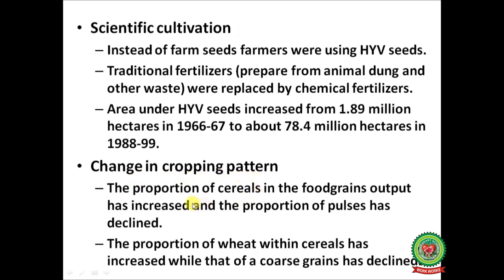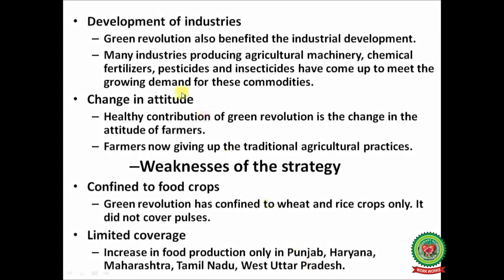Change in cropping pattern: the proportion of cereals in food grains output increased while the proportion of pulses declined. The proportion of wheat within cereals increased while that of coarse grains declined. Development of industries: Green Revolution also benefited industrial development — many industries producing agricultural machinery, chemical fertilizers, pesticides, and insecticides came up to meet growing demand. A healthy contribution of Green Revolution is the change in the attitude of farmers, who are now giving up traditional agricultural practices.